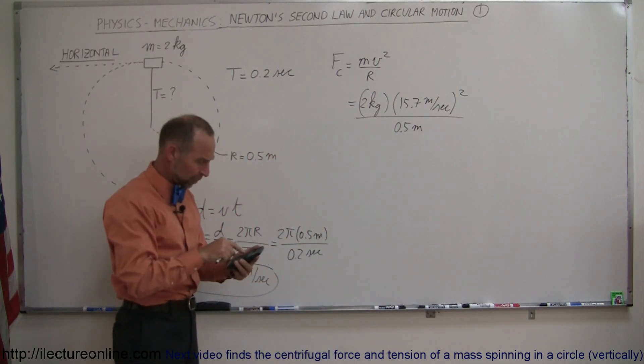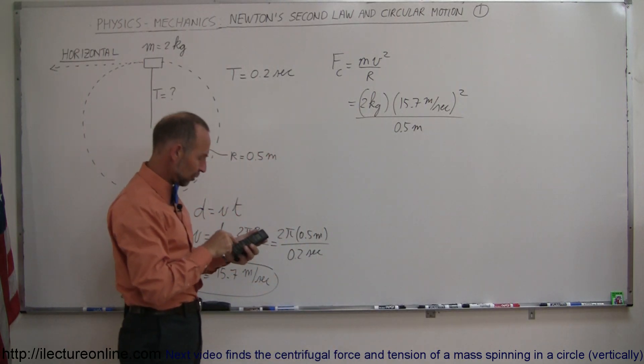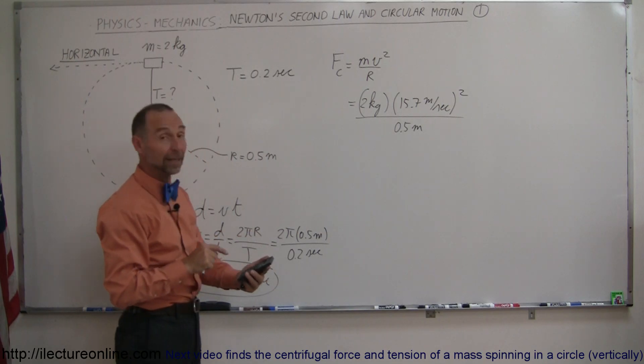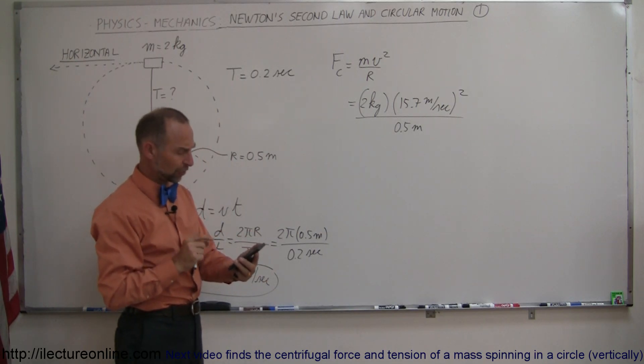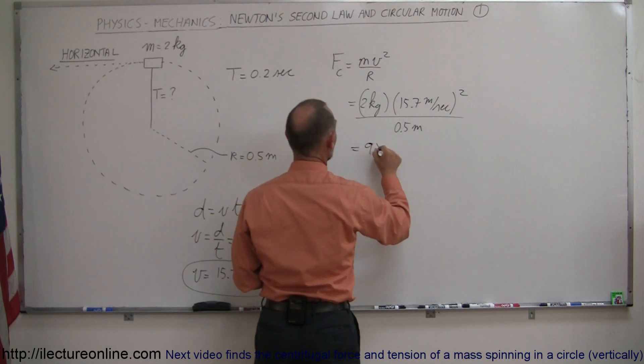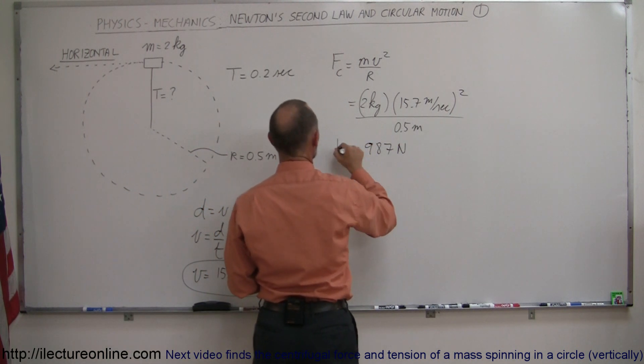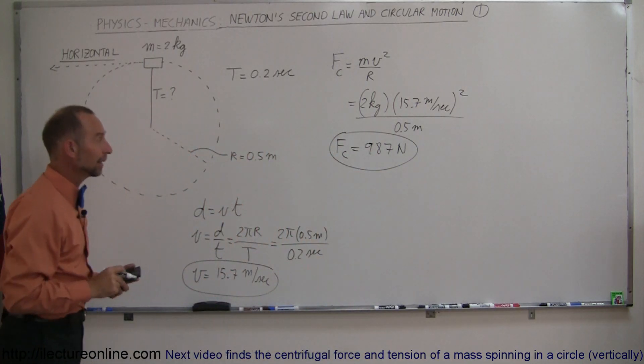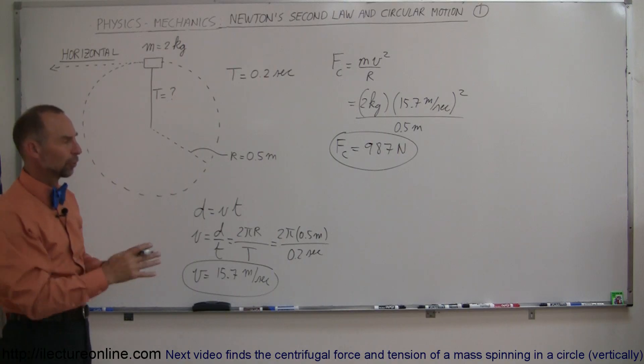So let's square this number, times 2, divided by 0.5 equals, and wow, quite a bit, that requires a force or a tension of 987 newtons, 987 newtons. So that's the force required to keep it going around the circular path, and that would then be known as the centripetal force.